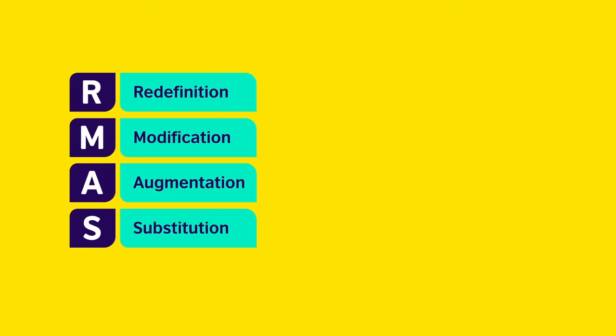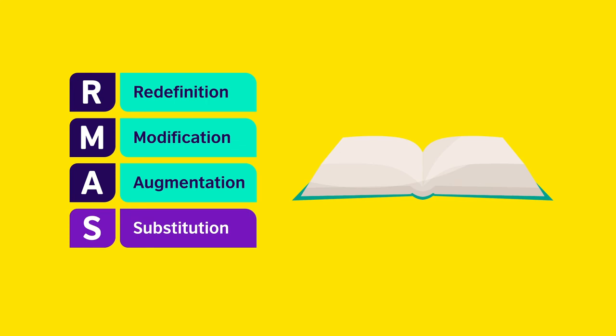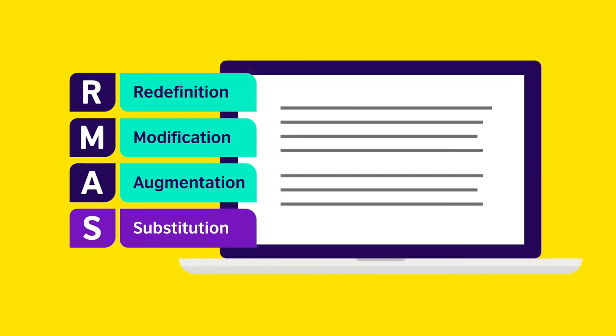Let's look at the framework. Substitution: at this level, we're using technology in place of paper. The task remains the same, but a computer is used as part of that task. For example, you find a text online and replace the text in your course book. Instead of reading a text in a book, your students read the text on the screen. There's no real functional change in what they're doing.